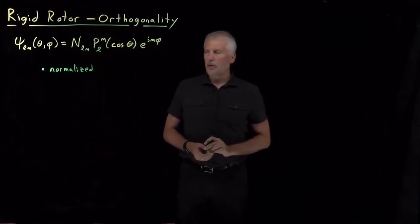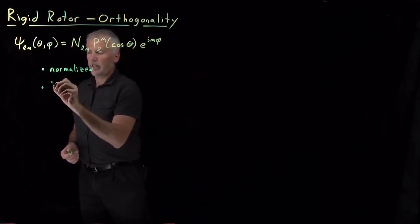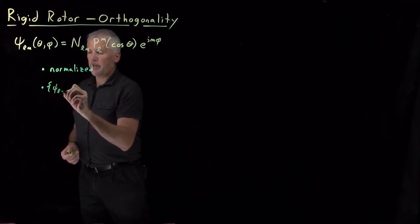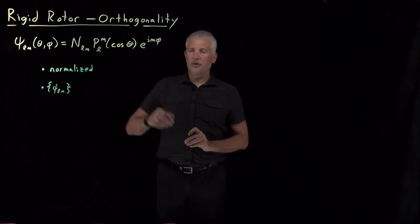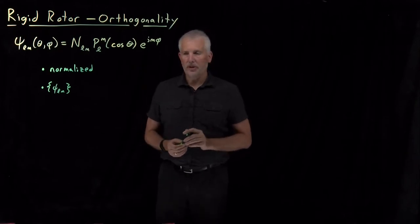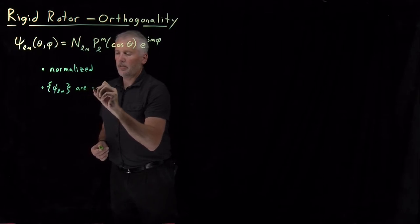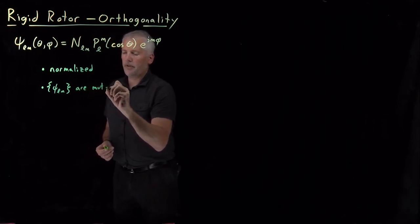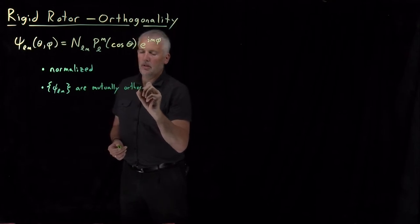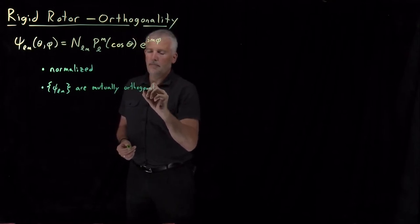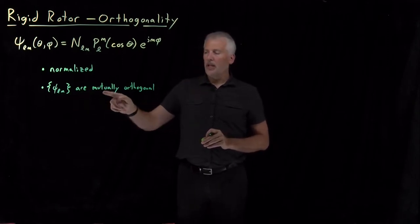They have one other property that's very handy, which is that they're orthogonal. What I mean by that is every pair of wave functions in this full set is orthogonal to each other. We say that the set of wave functions are mutually orthogonal — any pair that I choose, as long as they're not the same as each other, they end up orthogonal.